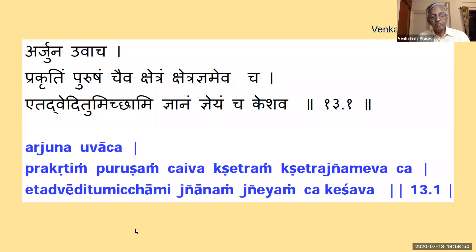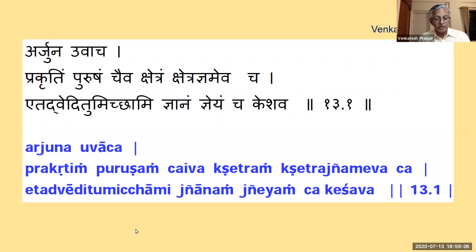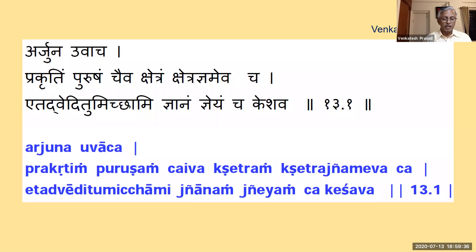Shri Guru Bhyo Namaha. We are studying the first chapter in Charma Shatka, that is Kshetra Kshetrajna Vibhaga Yoga. This chapter begins with Arjuna asking Krishna to teach six topics he names. It is said Shri Madhusudana Saraswati who wrote the Dhyana Shloka introduced this shloka; as such some books have this and it doesn't appear in certain other books. Our Guru Paramarthananda suggests to add this in our curriculum in order to understand the subject matter with clarity.